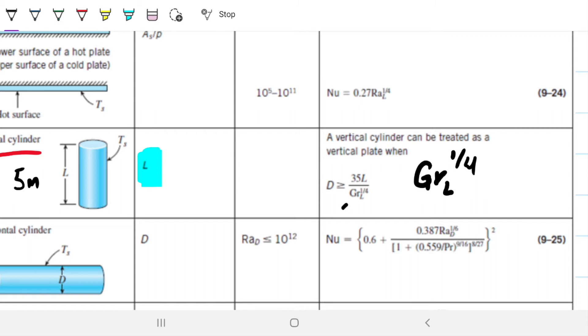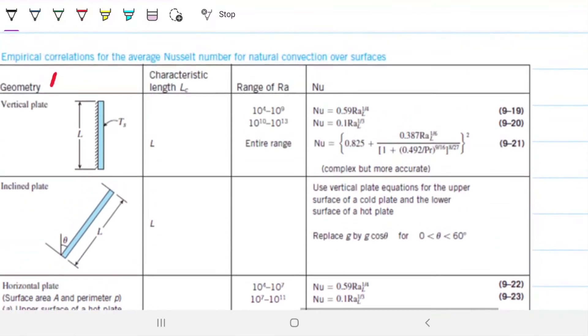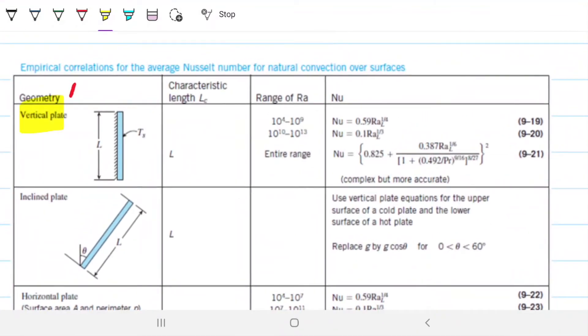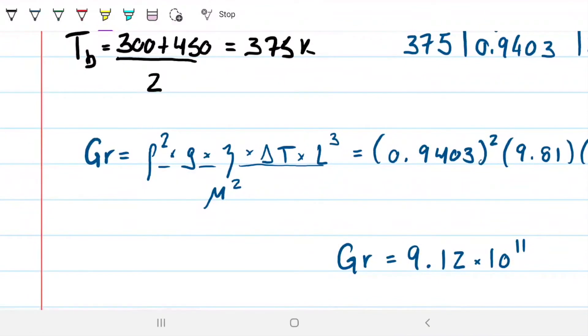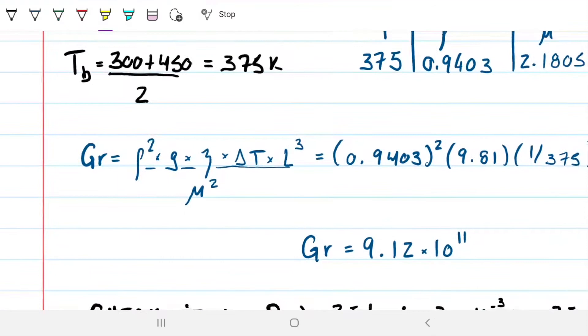And then there's no range because there's only one correlation that's given in this figure. A vertical cylinder can be treated as a vertical plate when the diameter is greater or equal to 35 times the length divided by Grashoff of L, okay, so Grashoff of the height. Note that this is, let me just write it a bit bigger. Grashoff subscript L, okay, indicating that's not Grashoff of the diameter, but the one for the length, one for the height, to the one-fourth.